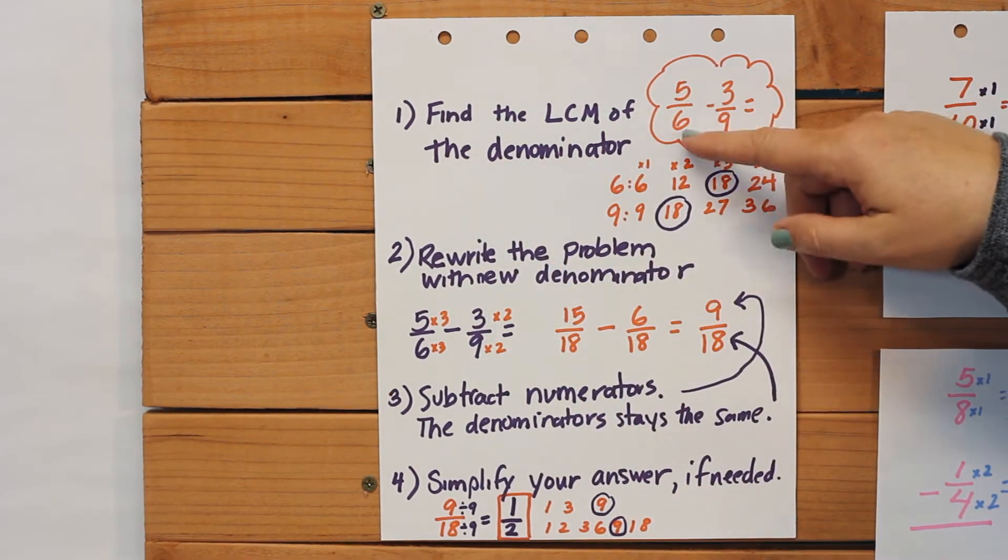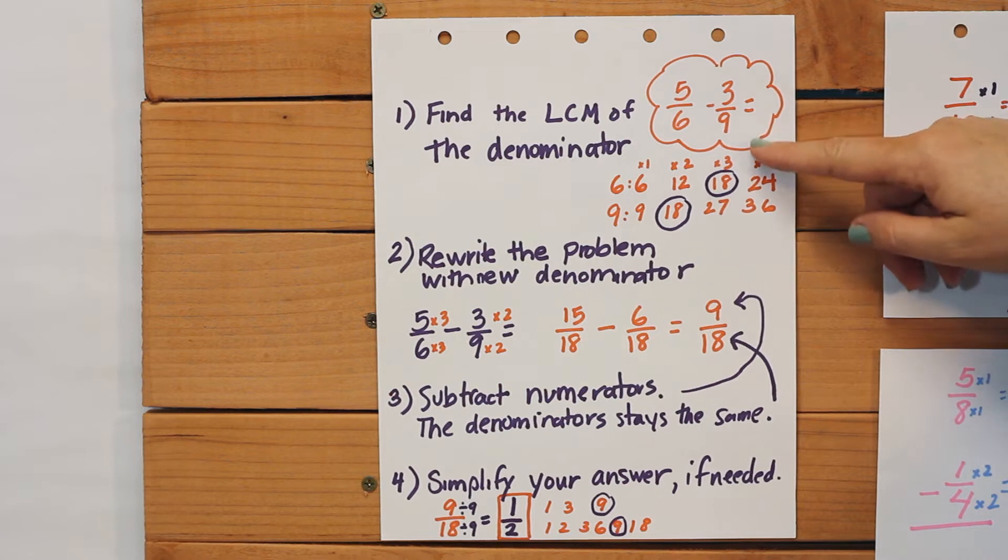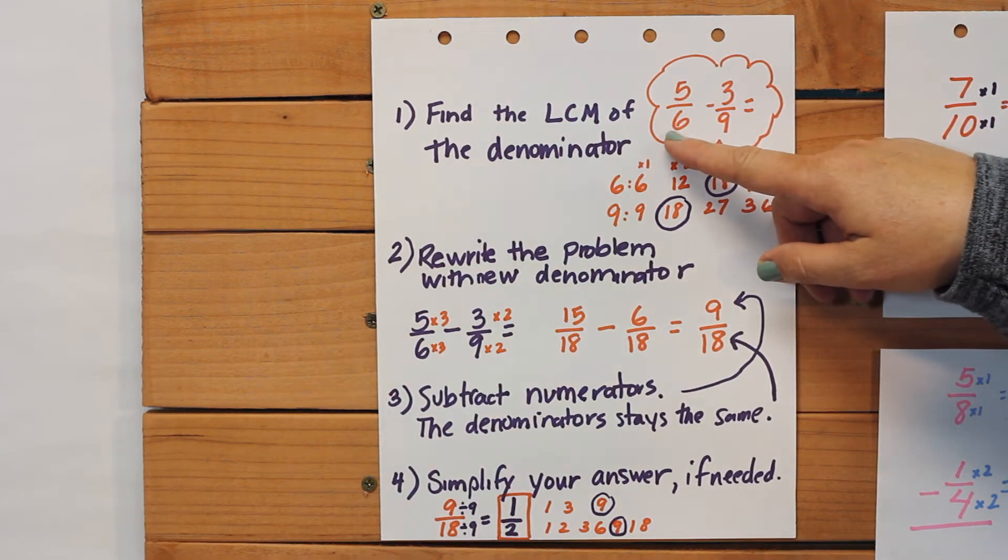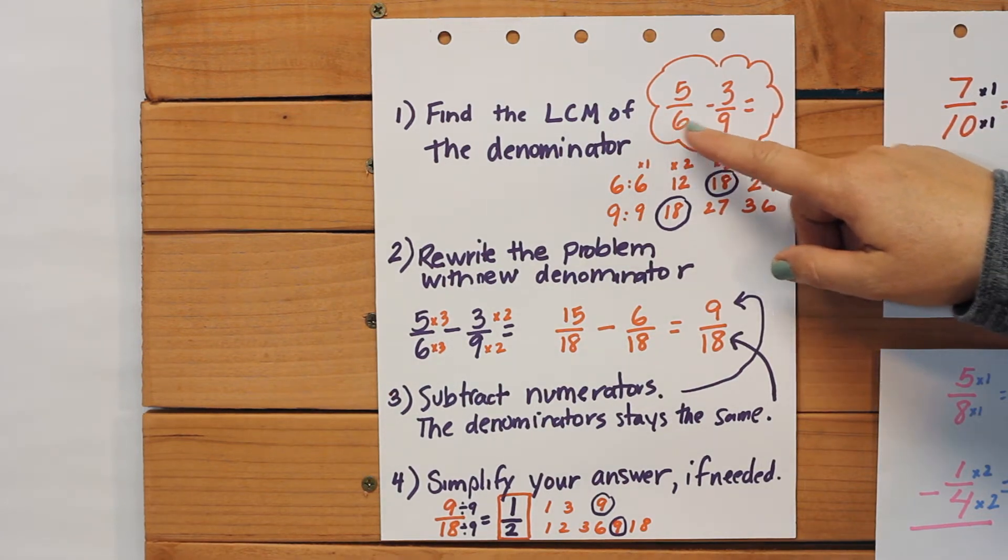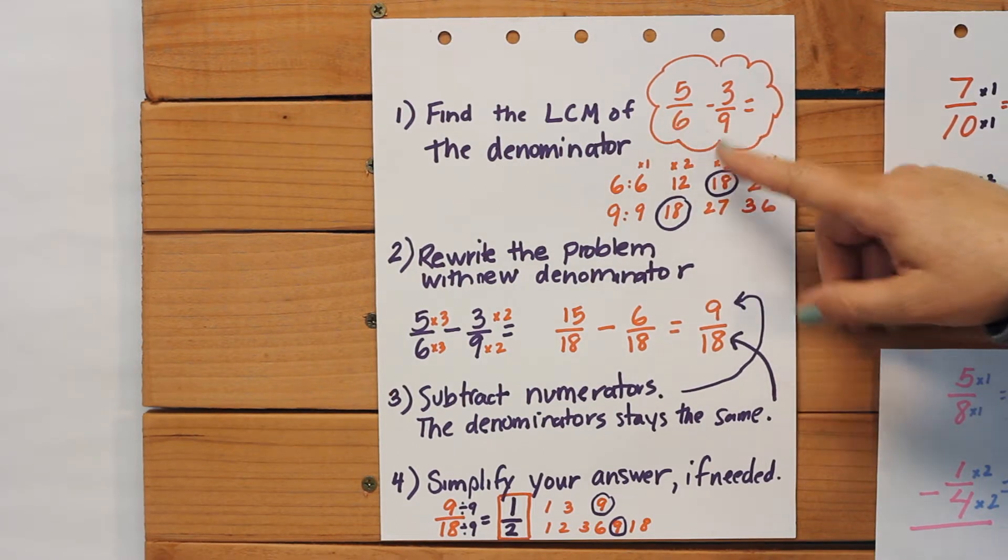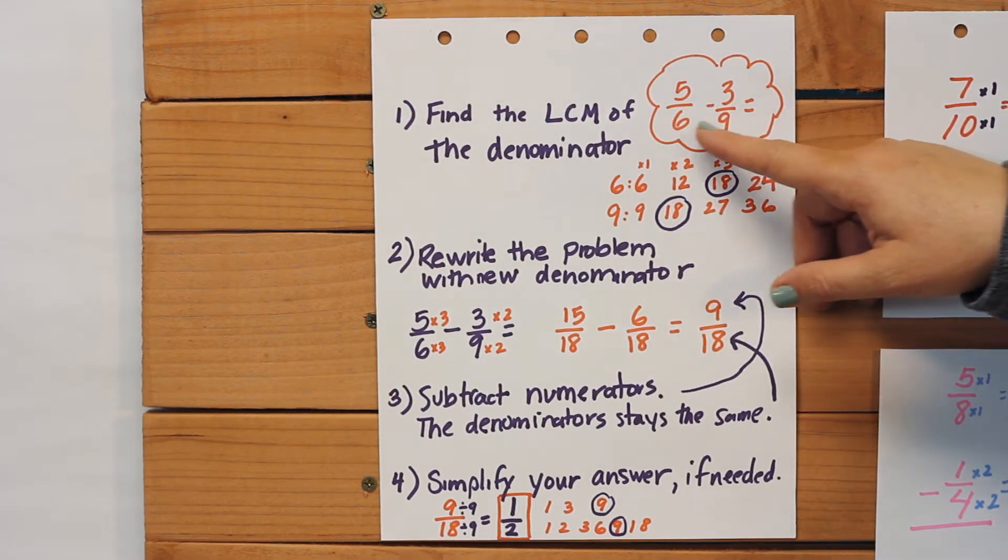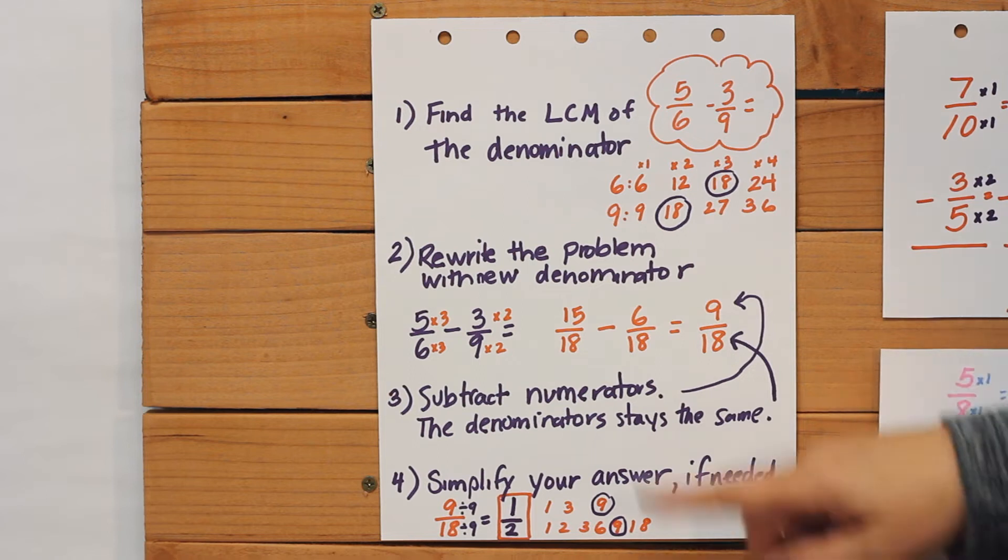Our problem is 5/6 minus 3/9. So what we have to do is decide six and nine, they have similar factors, but we still need to find the least common multiple.